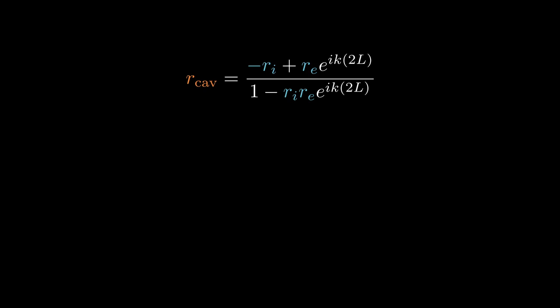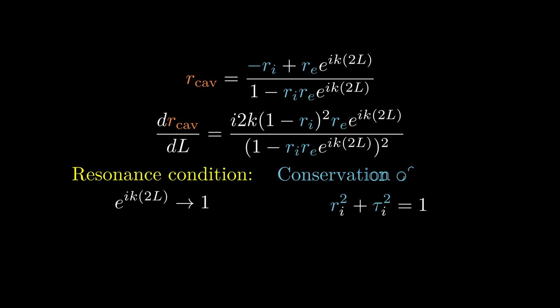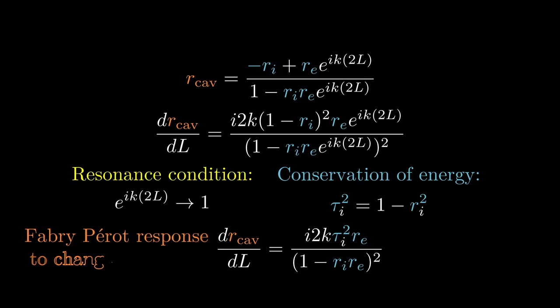Now I want to call attention to the extreme sensitivity to length that the cavity reflection has. The best way to do that is to take the derivative of the cavity length with respect to length. To further simplify this expression, we'll assume that the cavity is on resonance, and that energy is conserved in the electric field. This expression is the Fabry-Perot response to changes in length. I want to call your attention to the denominator here. We know that the denominator is already small, and here it's getting squared. This will make our reflected beams super sensitive to changes in length.